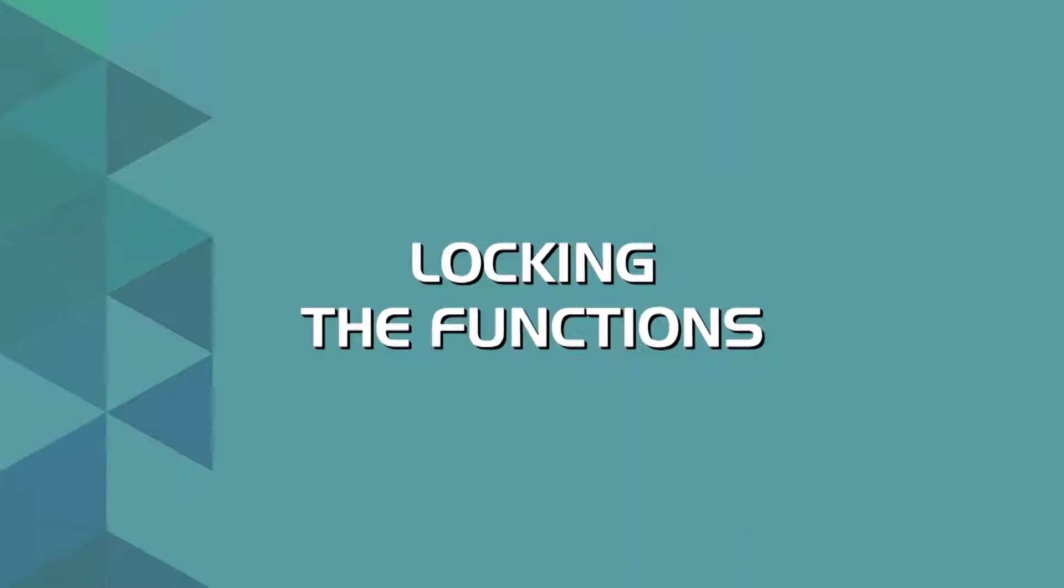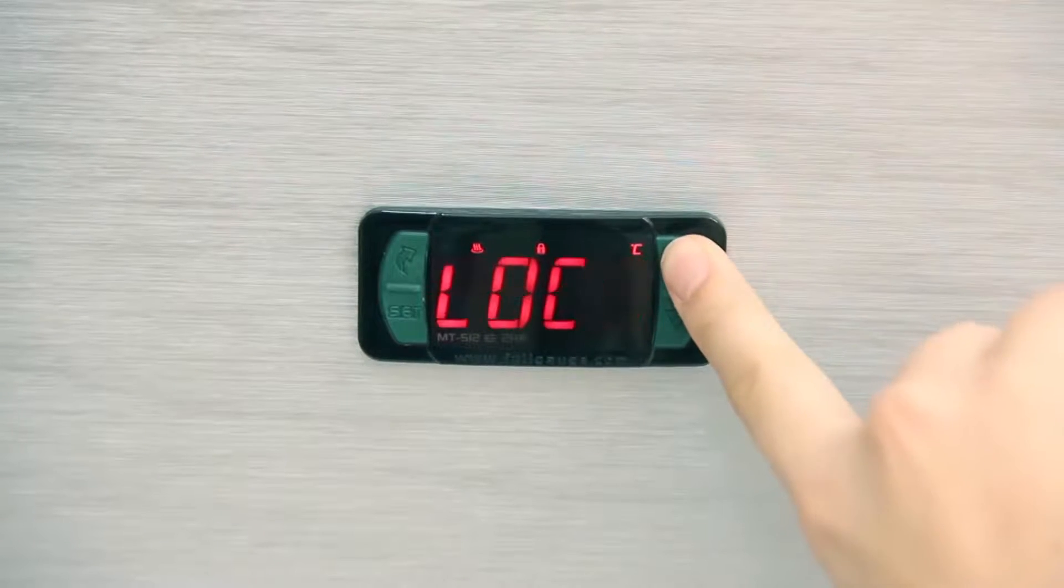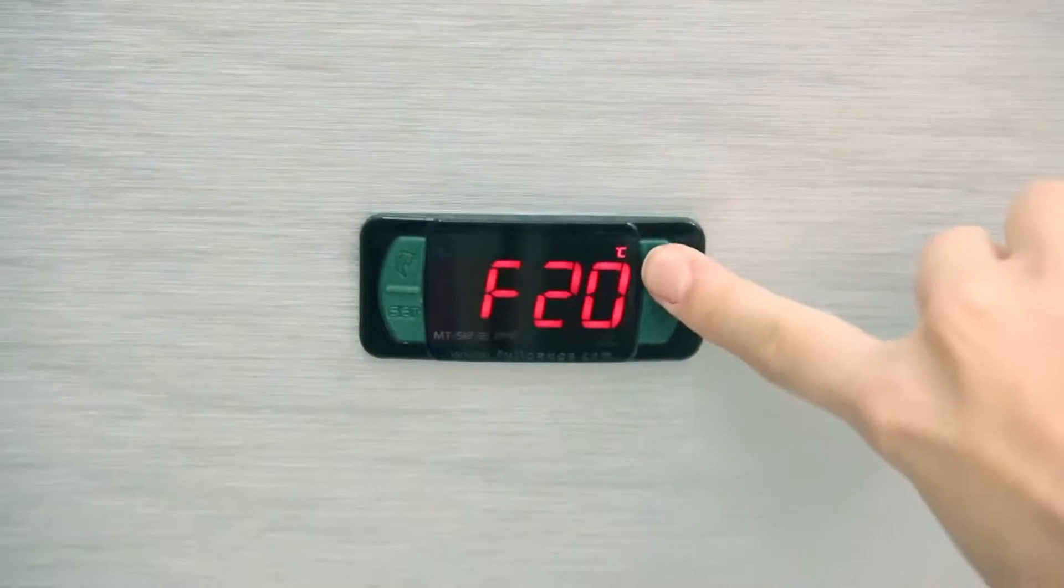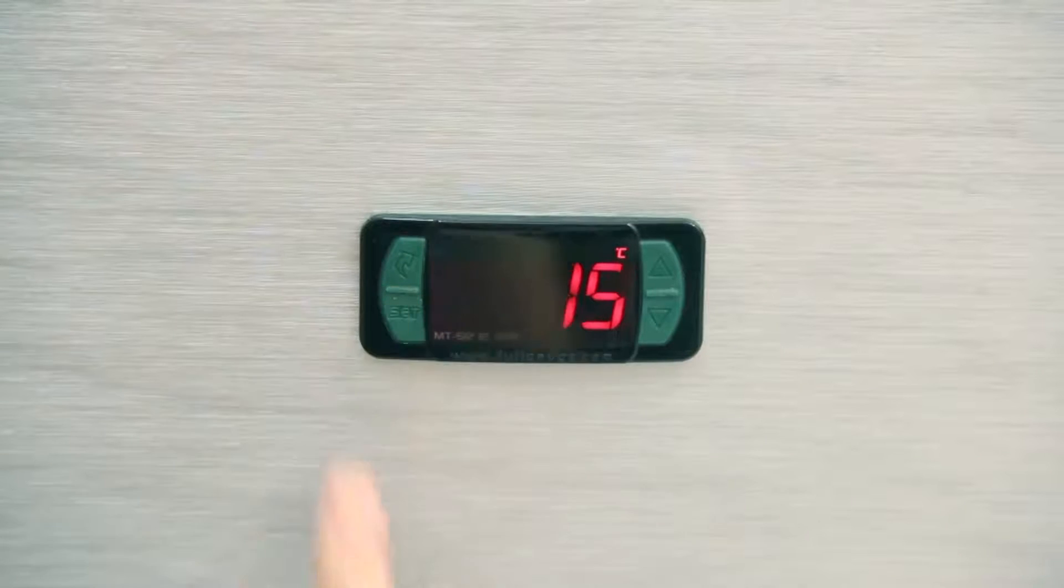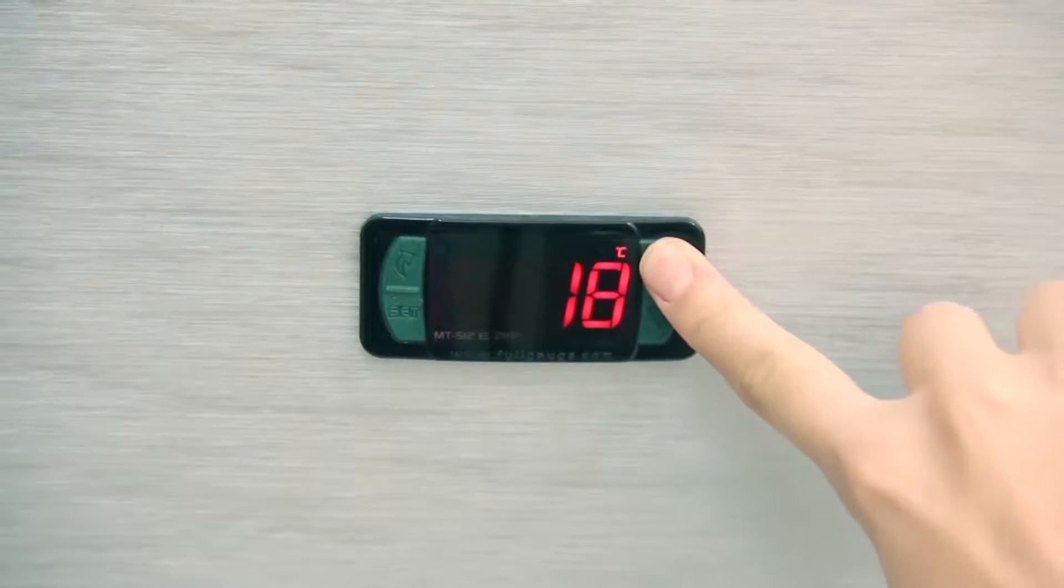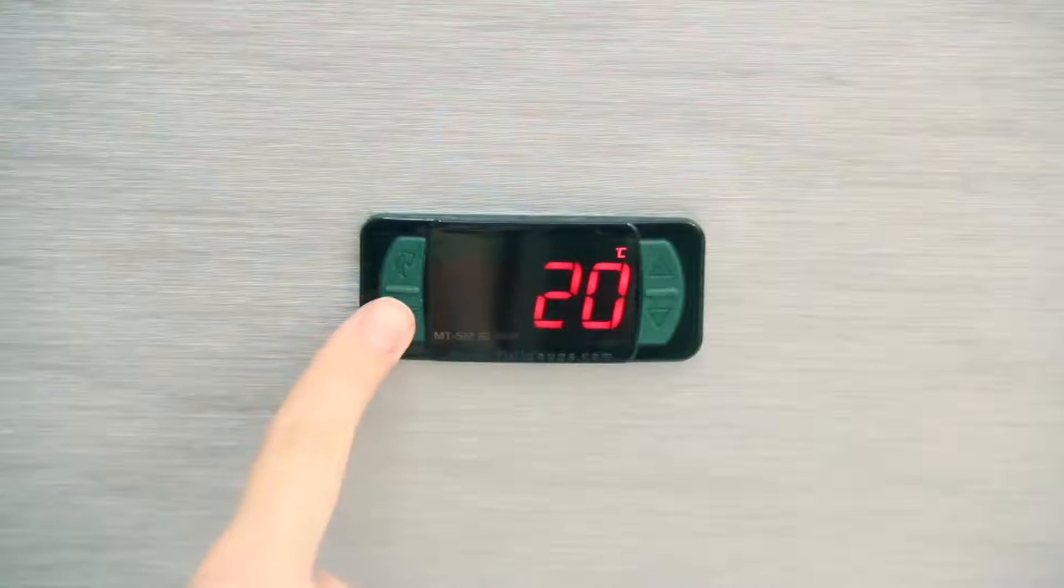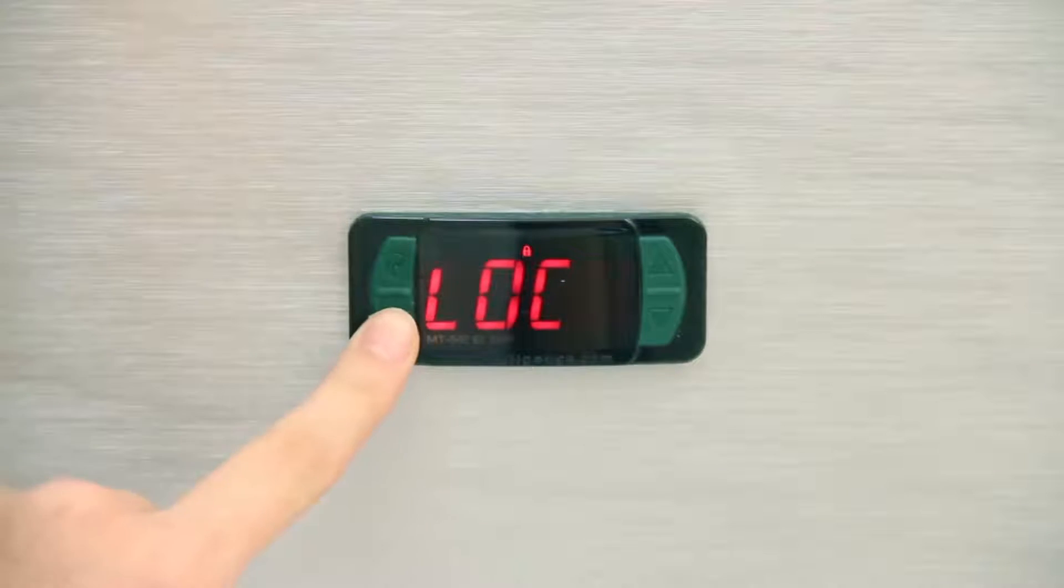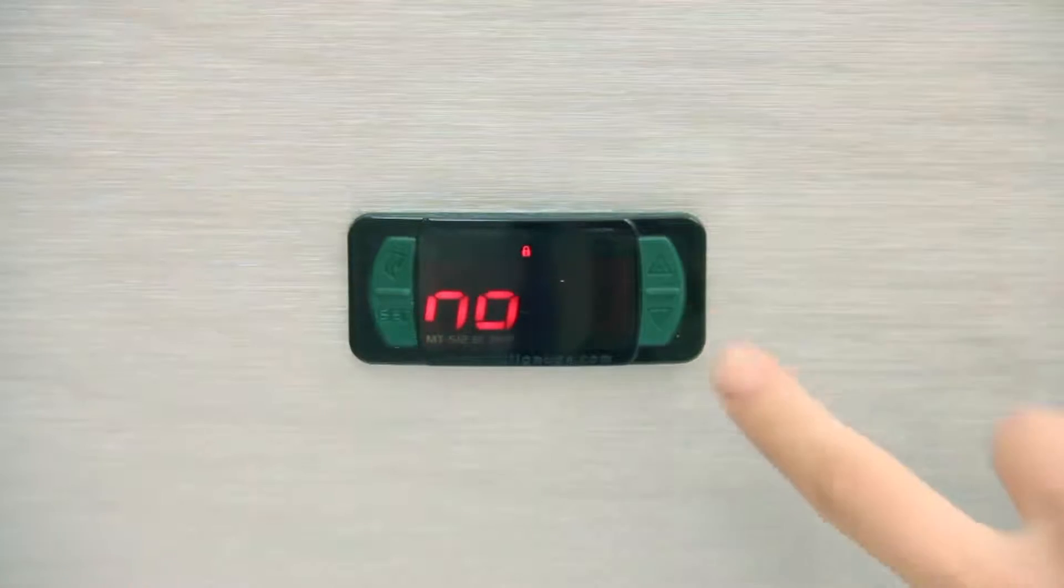Locking the functions. After locking, for safety, the parameters can be viewed but not changed. Note, to enable the lock, the parameter F20 should be set to a value greater than 14. After accessing the lock function with the FlatTech key, press set, then down until the message appears.